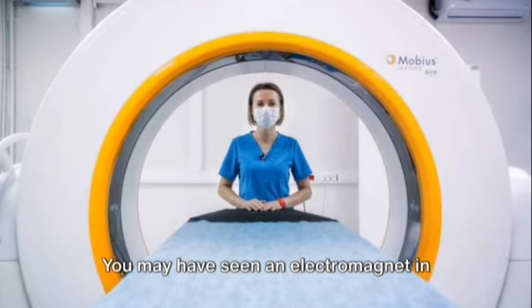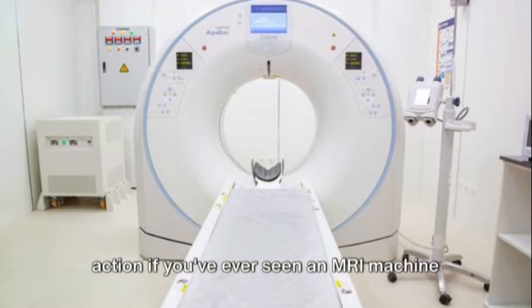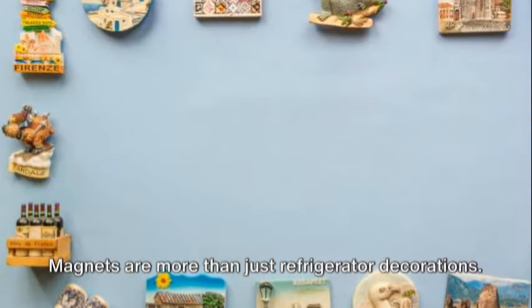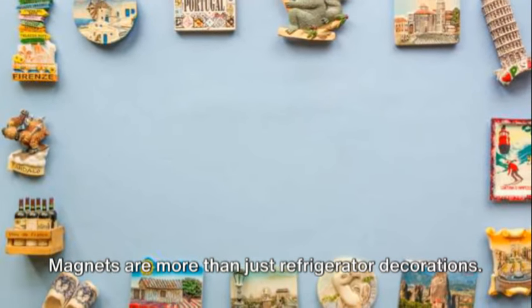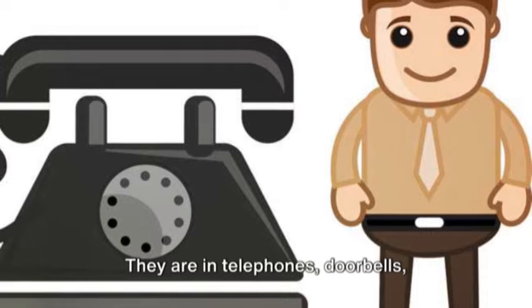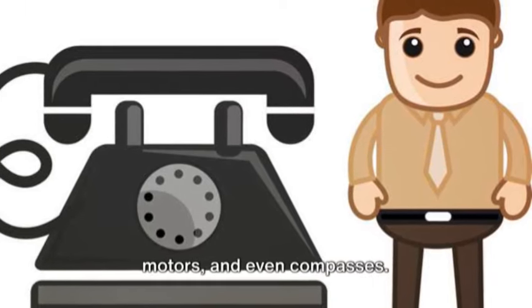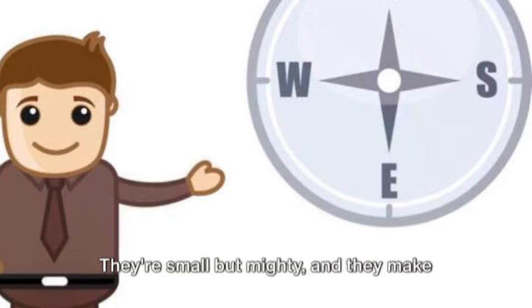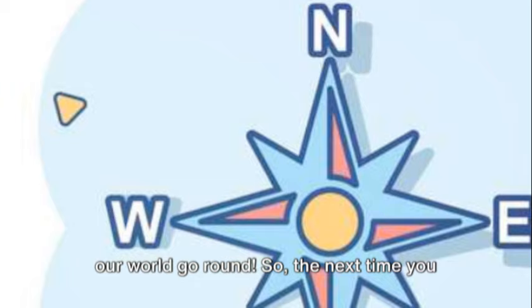You may have seen an electromagnet in action if you've ever seen an MRI machine at a hospital. Magnets are more than just refrigerator decorations. They are in telephones, doorbells, motors, and even compasses. They're small but mighty, and they make our world go round.